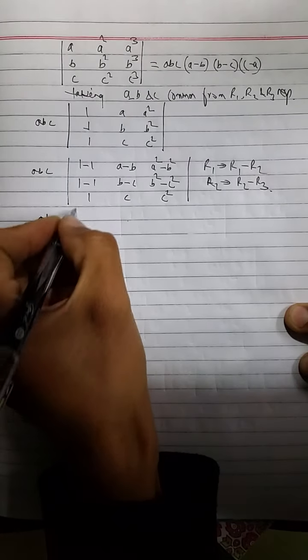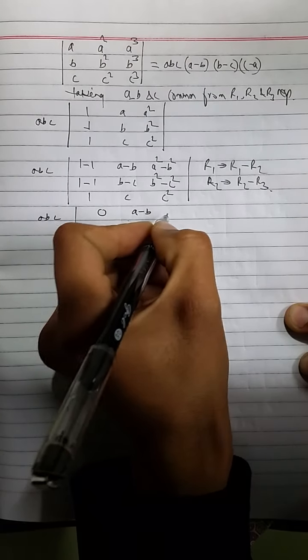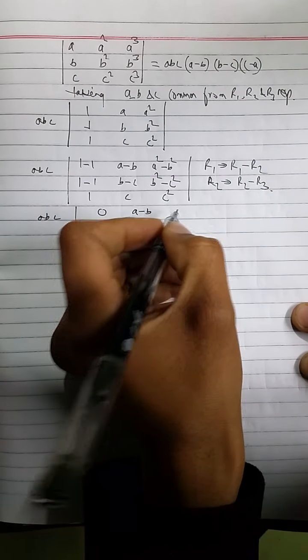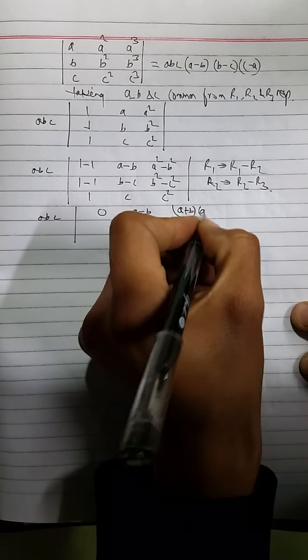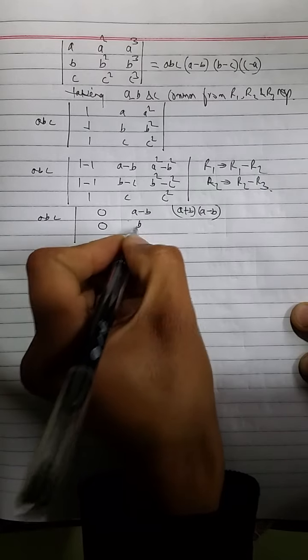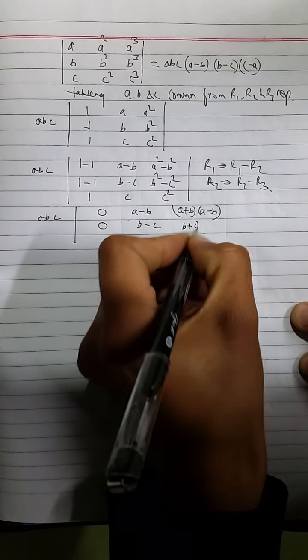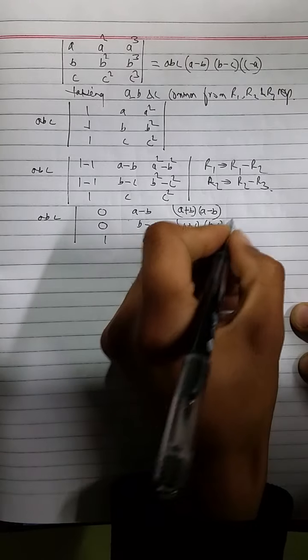Now, A, B, C, 1 difference 1 is 0. A difference B, A square minus B square can be formulated by the factorization as A plus B into A minus B. And similarly, for second row 0, B minus C, B plus C into B minus C. And 1, C, C square for third row.